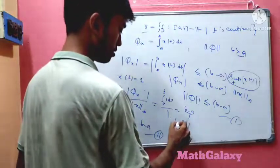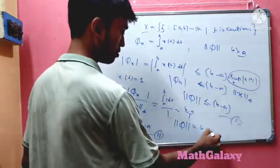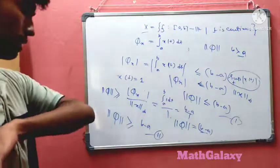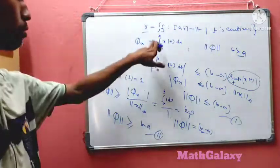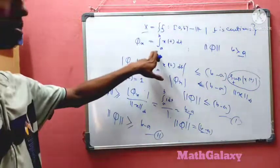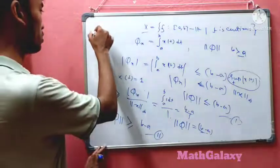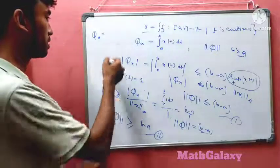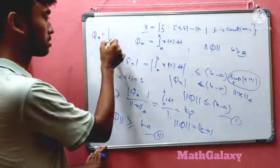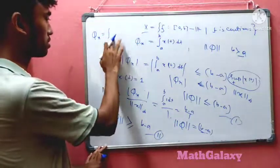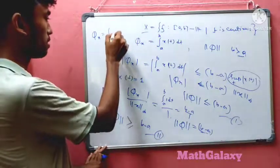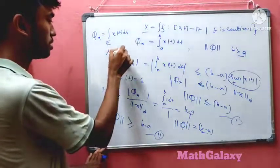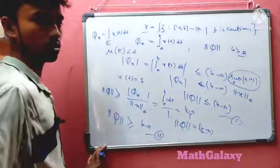Combining both inequalities — ||φ|| ≤ b - a from the upper bound and ||φ|| ≥ b - a from the constant function — we can clearly conclude that the norm of φ equals b minus a. That is the complete argument.